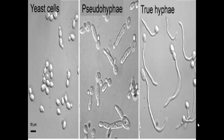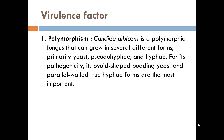This shows figures of yeast, pseudohyphae, and true hyphae. There are virulence factors that make Candida pathogenic. One is polymorphism — the yeast, pseudohyphae, and hyphae forms. Researchers have noted a rise in hyphae during infections, suggesting that hyphae are responsible for causing pathogenicity.